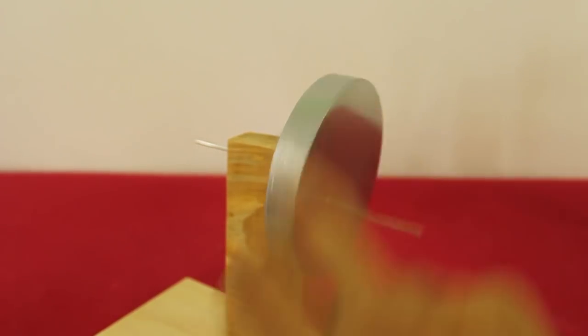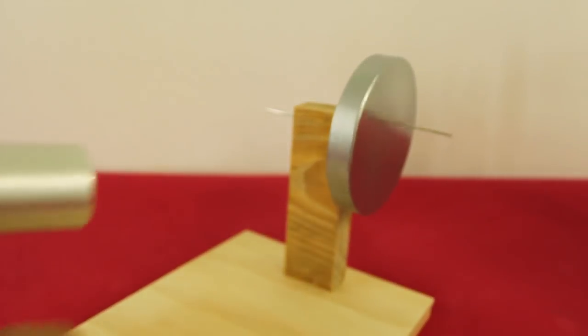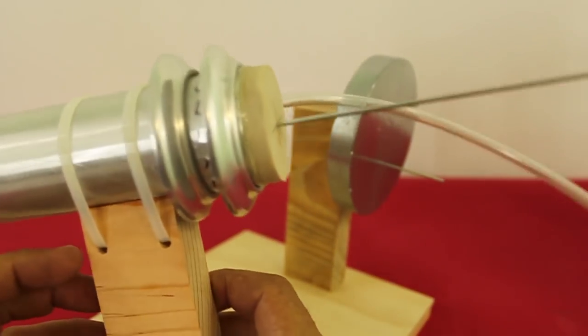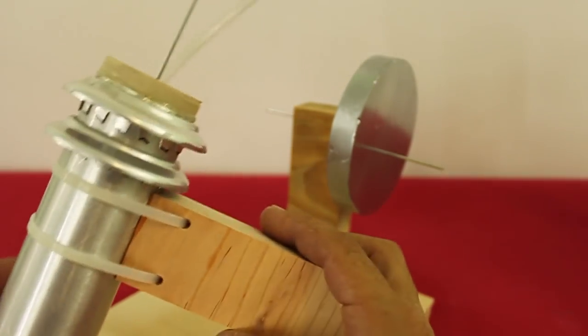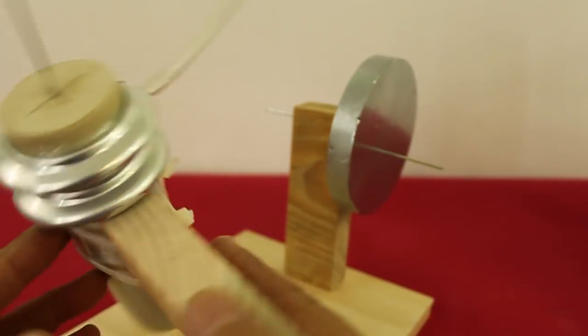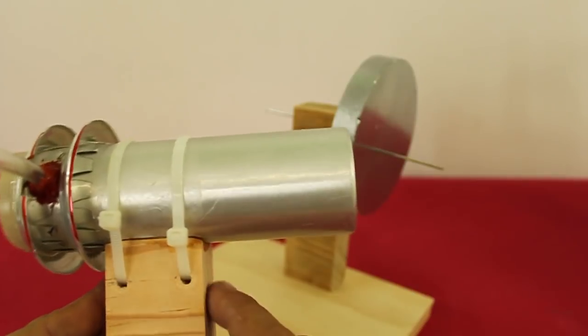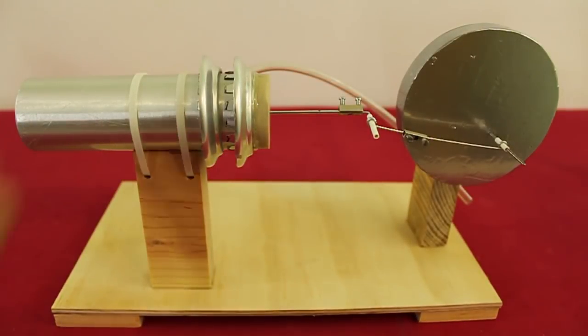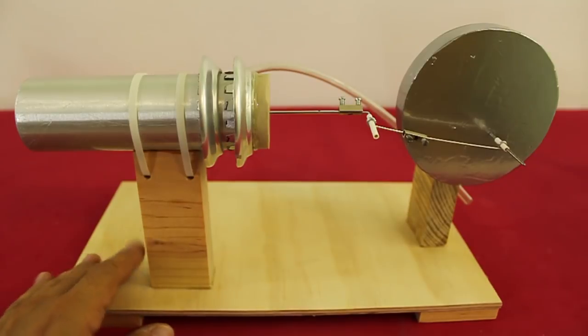The flywheel is in place and now I will install the displacer cylinder. I attached the cylinder to this piece of wood using plastic ties. The displacer cylinder is installed and joined to the flywheel.